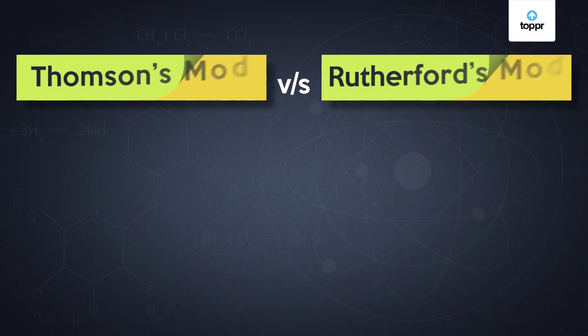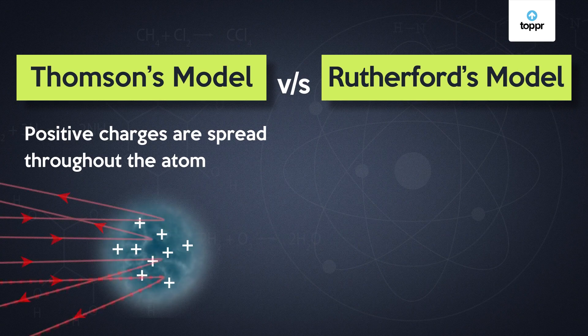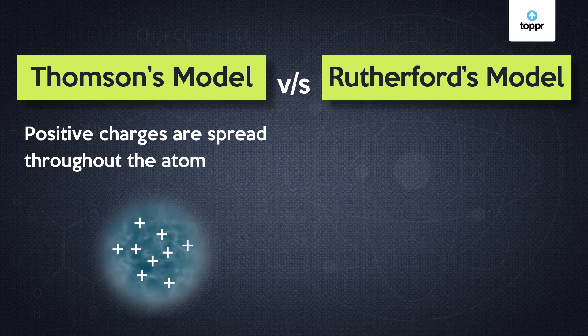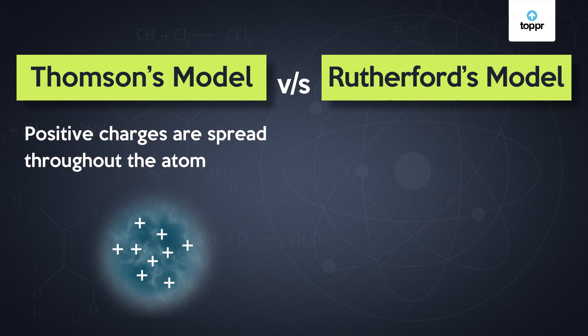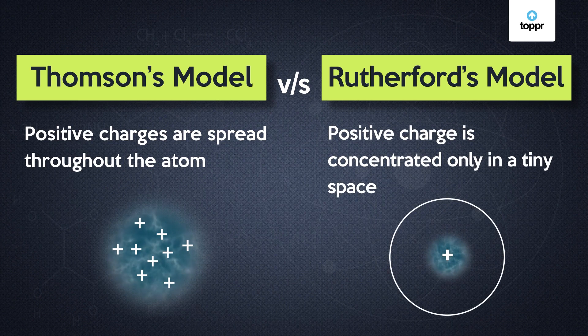The study of this model is incomplete without a comparison with Thomson's model. Thomson said that positive charges are spread throughout the atom. If Thomson's model was correct, all the alpha particles would have bounced back, because the positive charge would repel the alpha particles no matter how they approached. On the other hand, Rutherford predicted that the positive charge is concentrated only in a tiny space, so there are only some chances of deflections.